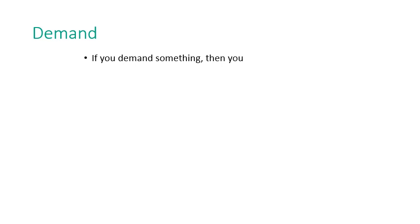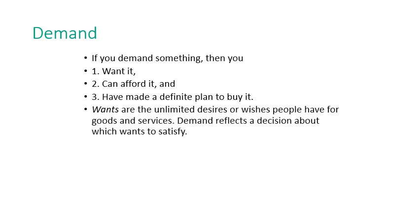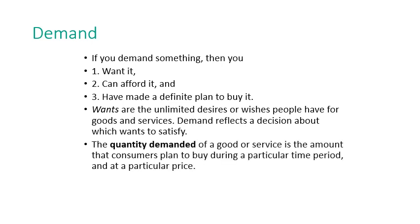Any market has two dimensions or two powers. The first is demand. If you demand something, you want it, you can afford it, and you have made a definite plan to buy it. Demand reflects a decision about which unlimited desires or wishes people have for goods and services — and which ones to satisfy.